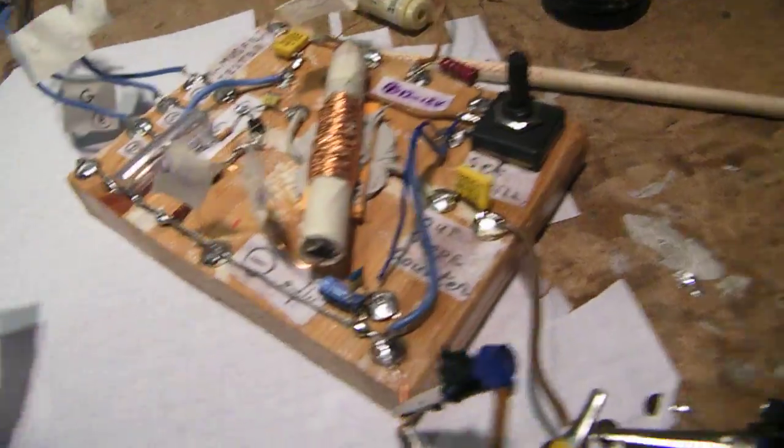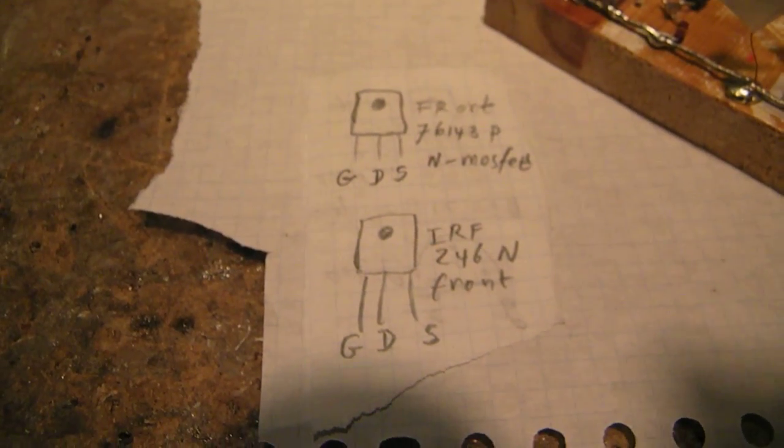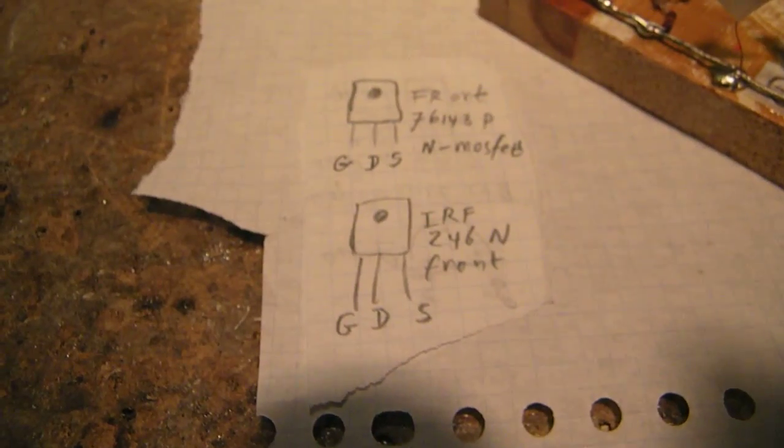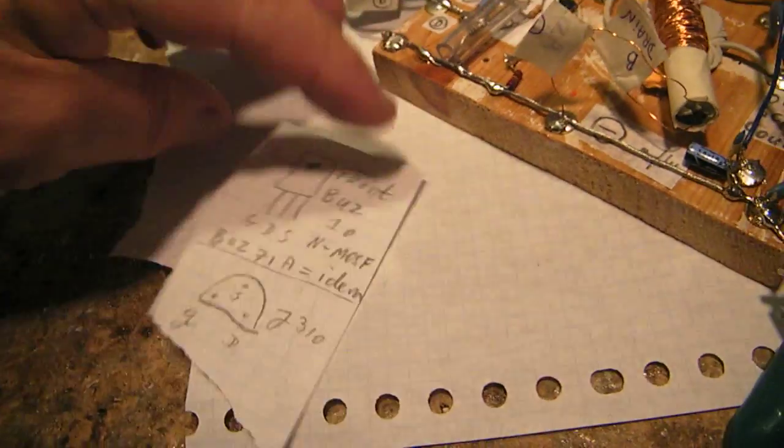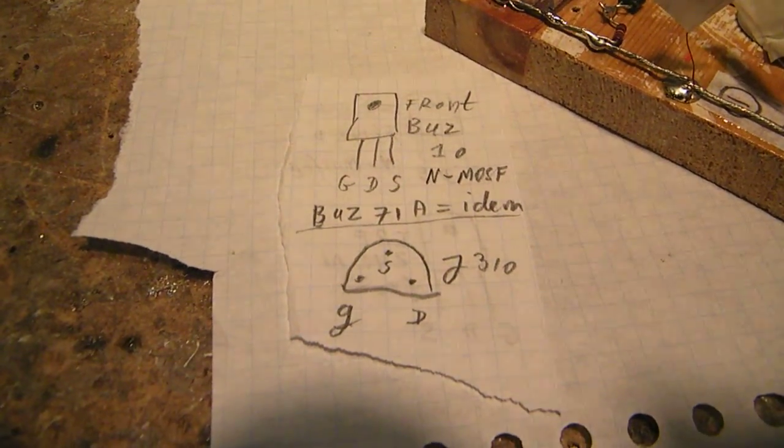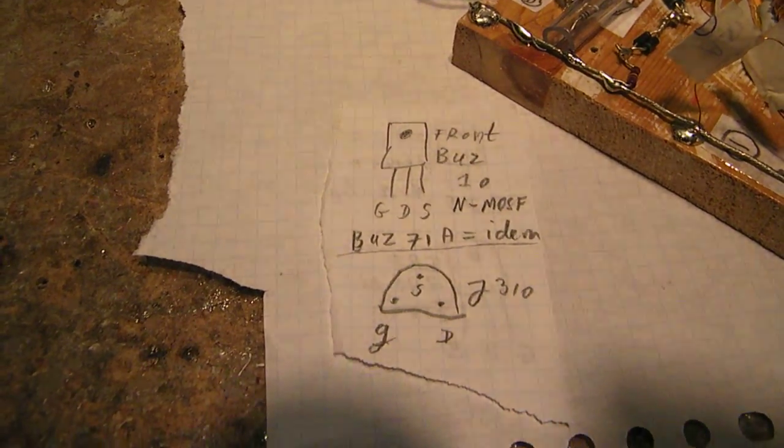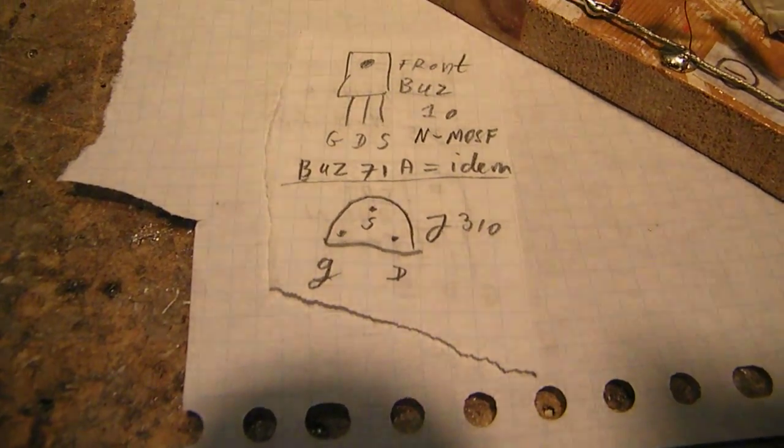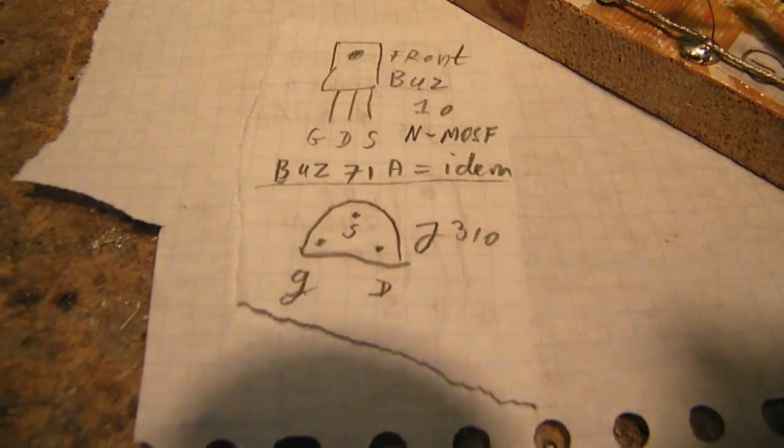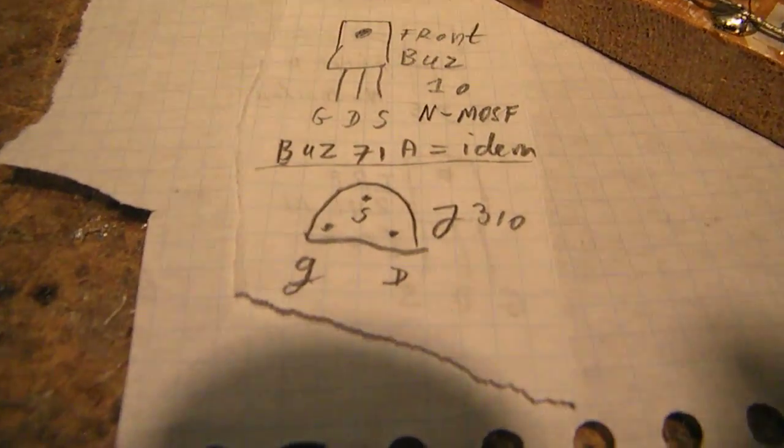Here are their pin connections: the 76143P, the IFRZ46N, the BUZ71, the BUZ10, and the YEE310. That's a small signal N-FET made for radio applications, oscillators, etc.